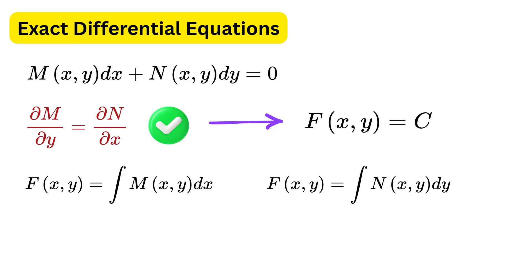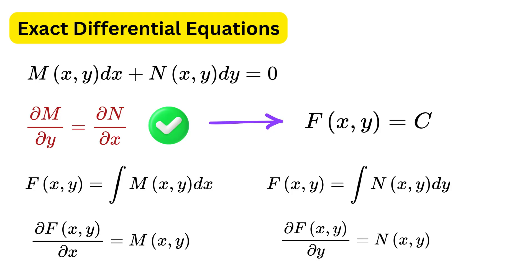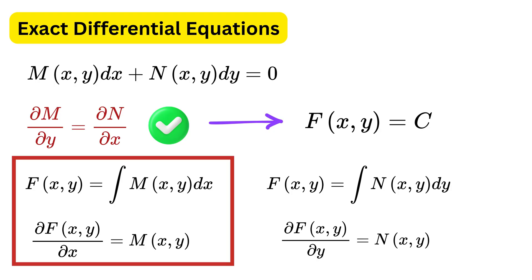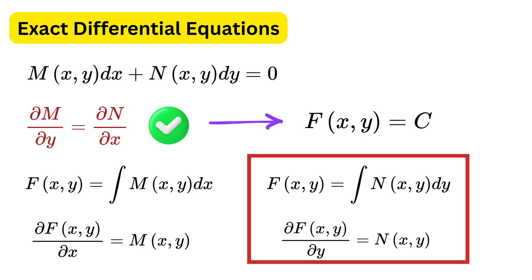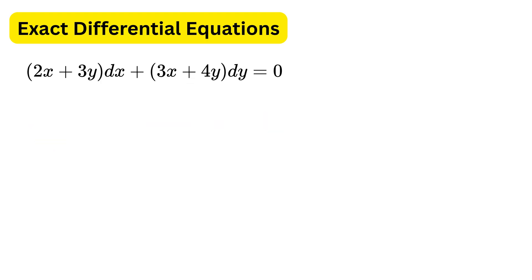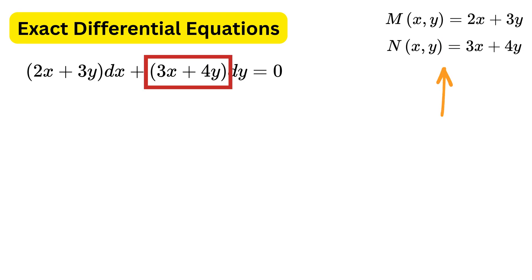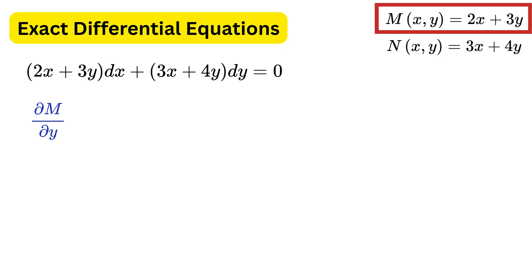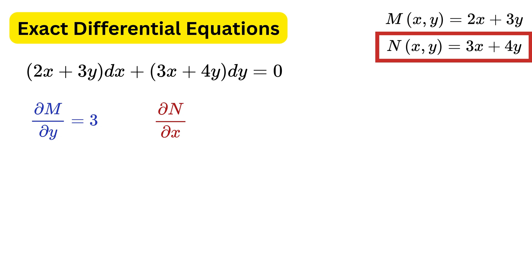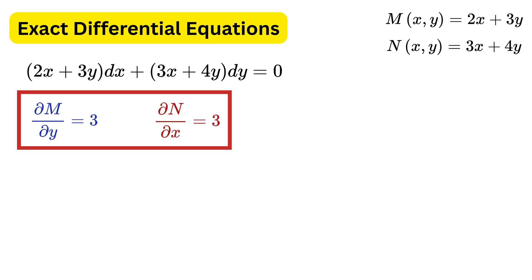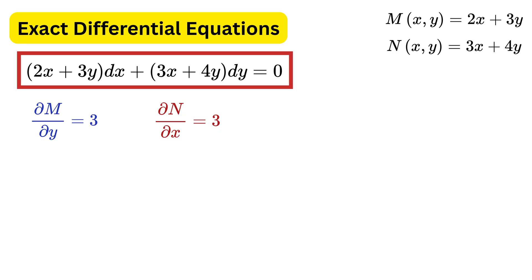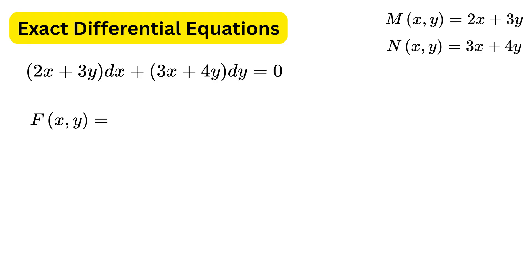We can rewrite f such that its partial derivative with respect to x is M and its partial derivative with respect to y is N. Suppose we have an example where M and N are given functions. The partial derivative of M with respect to y equals 3, and the partial derivative of N with respect to x also equals 3. Since they are equal, this differential equation is exact. We find f using the integral of M with respect to x.